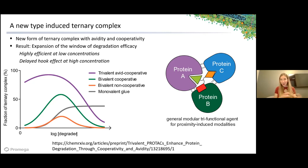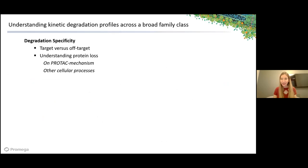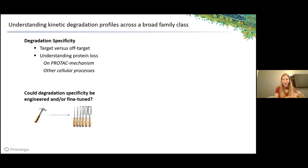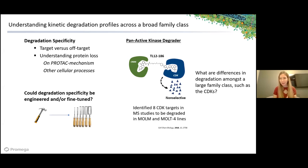We also had another goal: understanding degradation specificity—both target versus off-target degradation, and understanding what protein loss actually means. Is it on-mechanism via the degrader, or is the compound driving protein loss through other cellular mechanisms? And could we use degradation in a subtler fashion—fine-tuning the level of degradation, fine-tuning degradation of certain isoforms, or engineering in specificity? We were really inspired by the work from Nathaniel Gray's group with the pan-active kinase degrader, showing that you could start with a pan-active precursor molecule, make it a degrader, and achieve specificity.